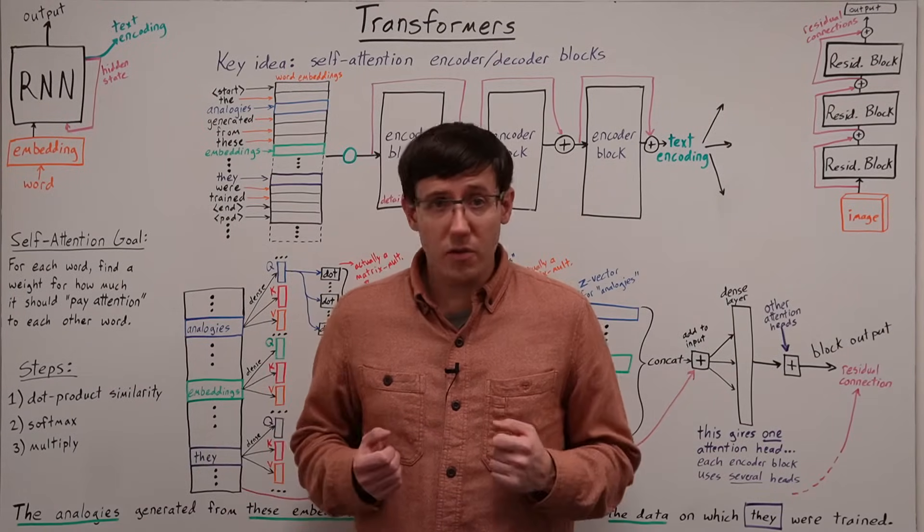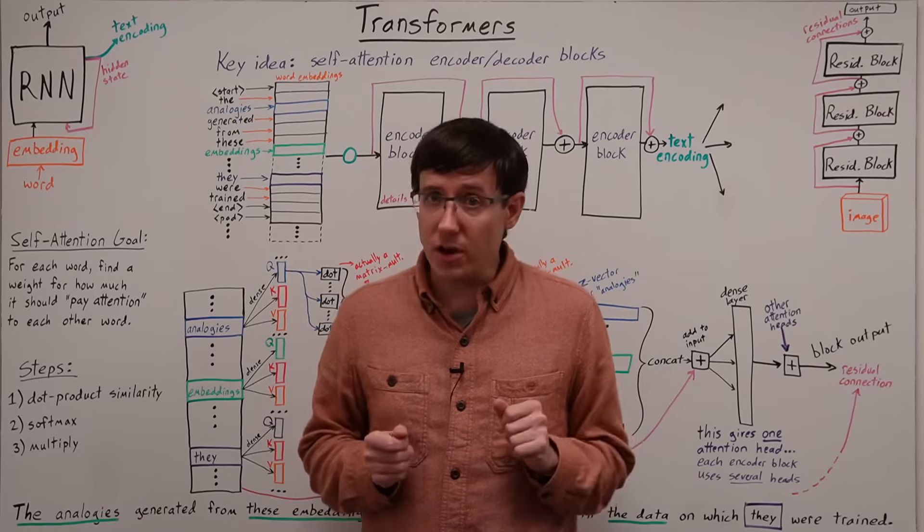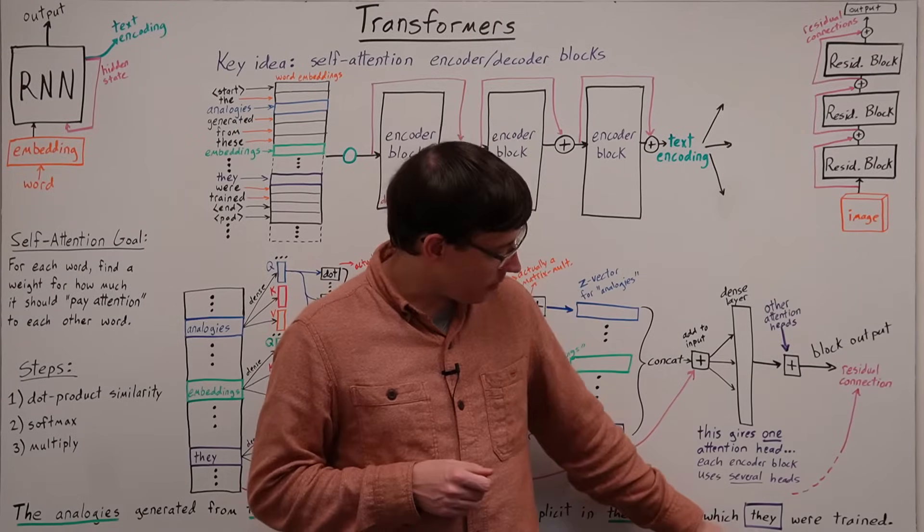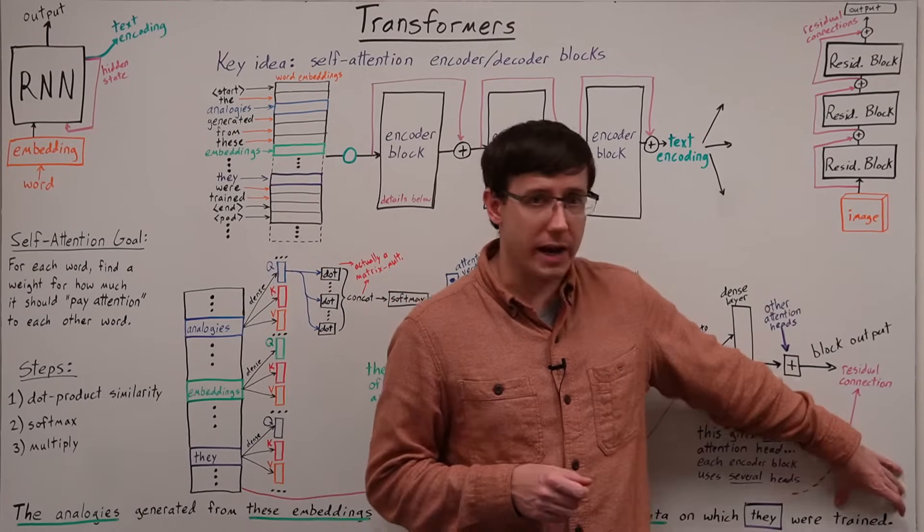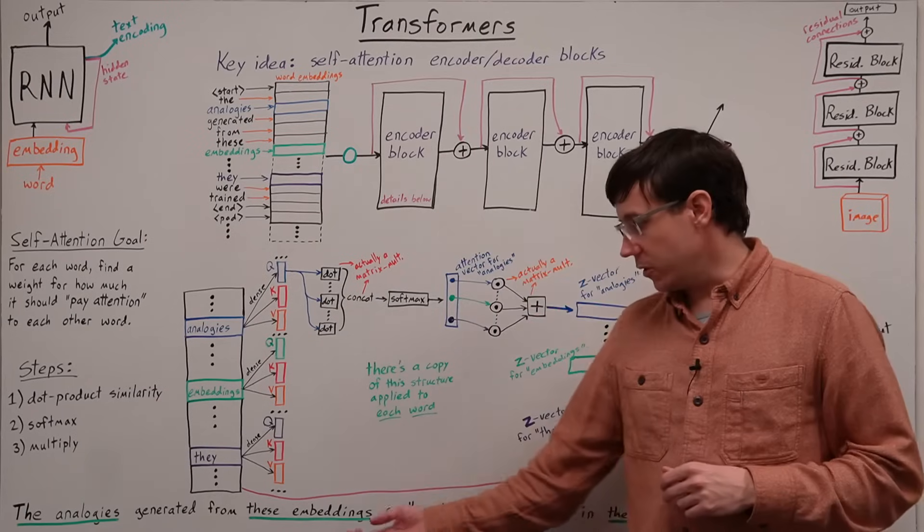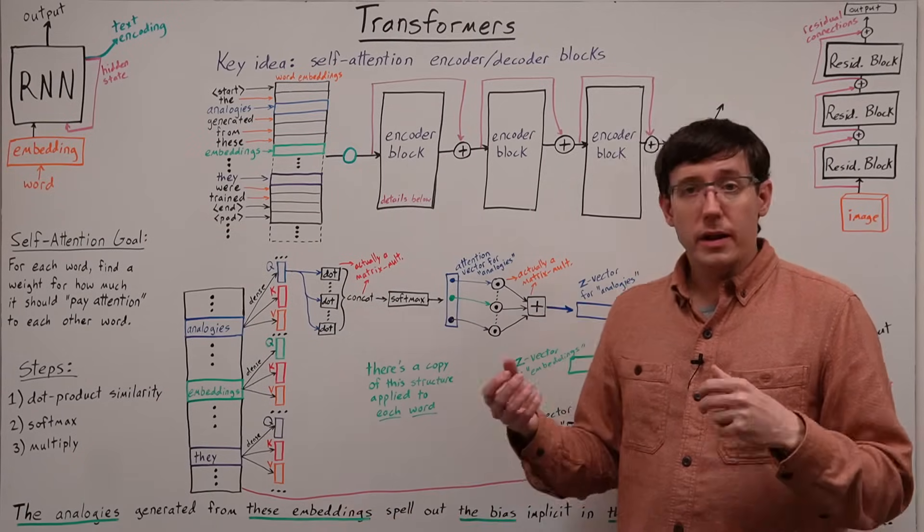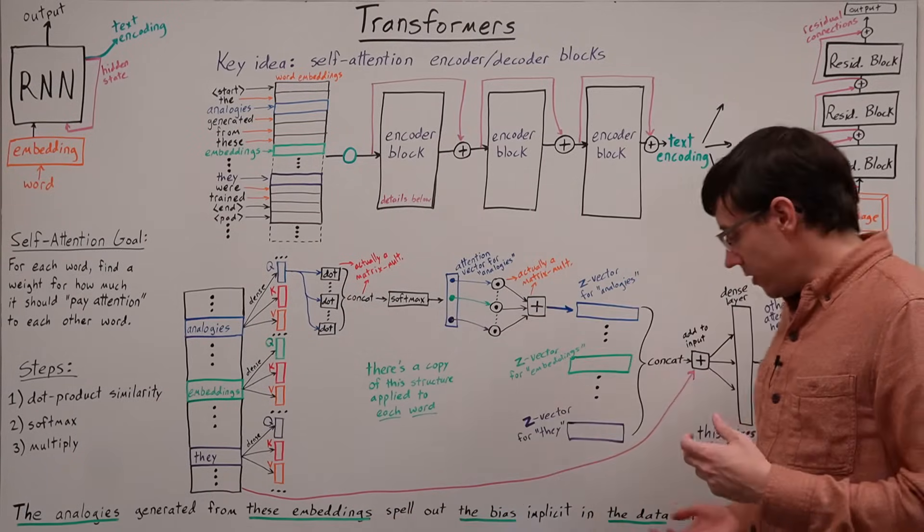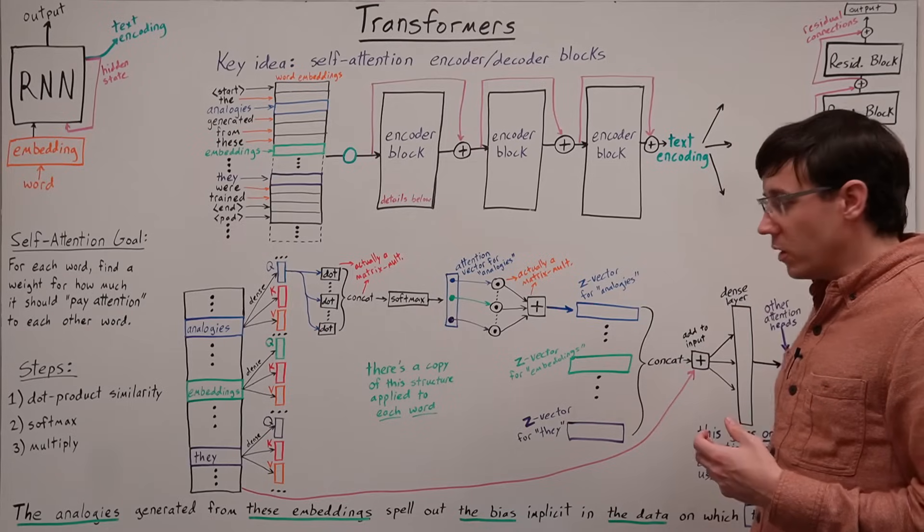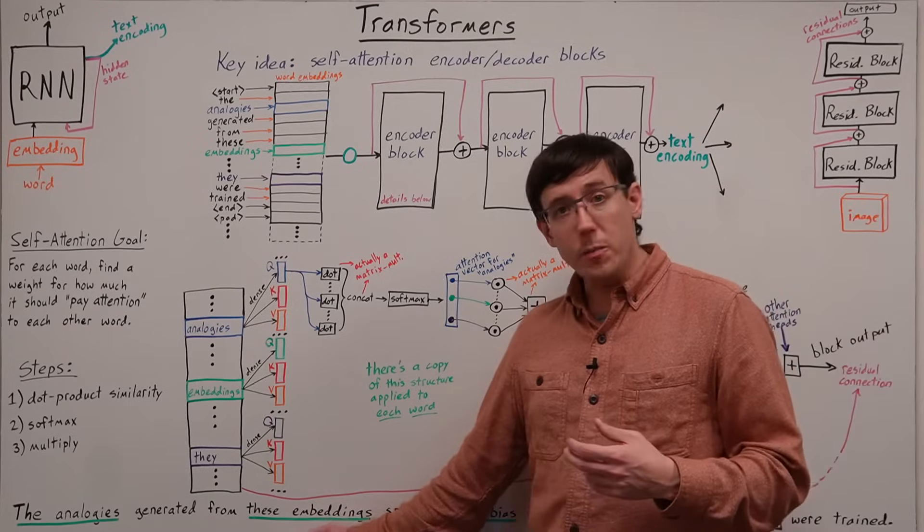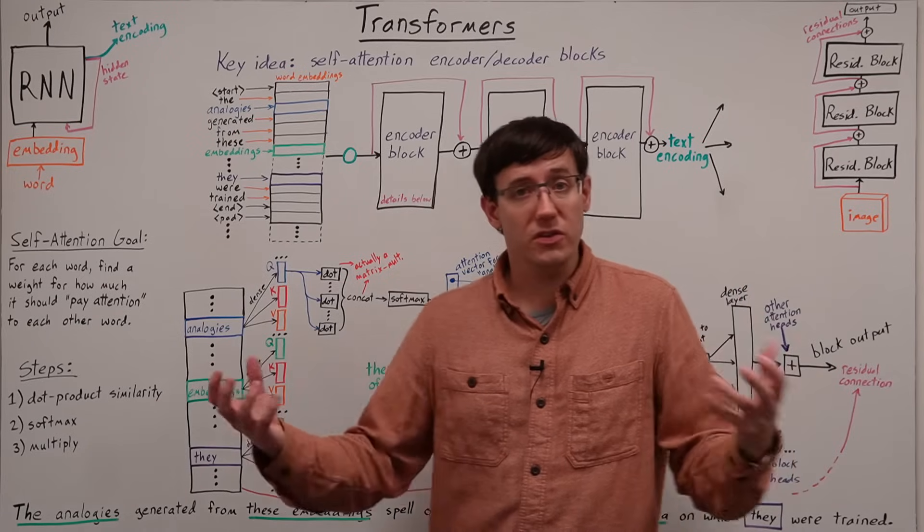But as speakers of English with a little knowledge of deep learning, we can infer that since they are being trained, that refers back to the embeddings. And so, understanding the end of the sentence requires us to think back to context that was established earlier.